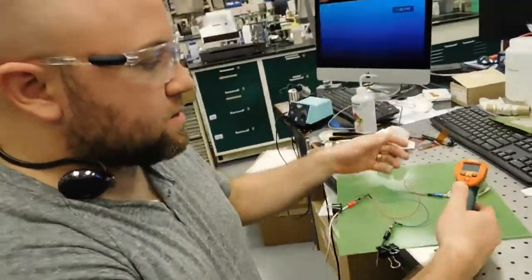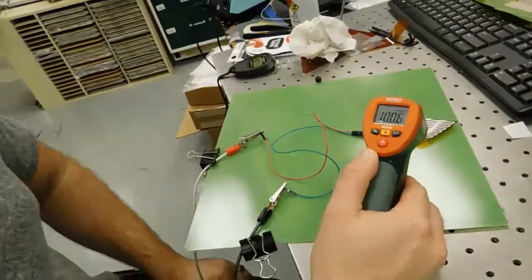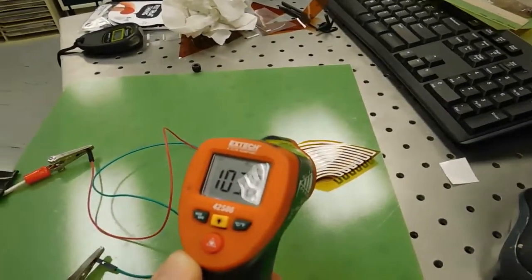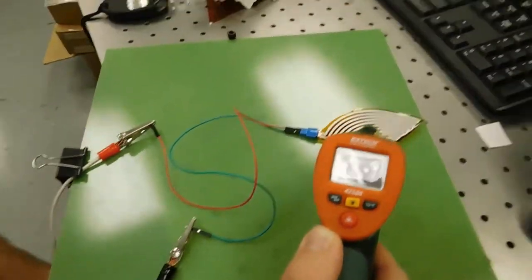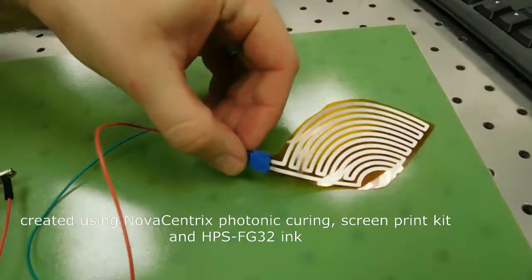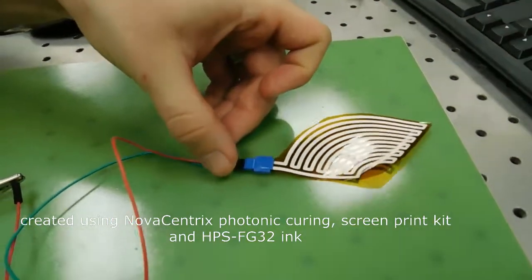And of course it's a heater, so you should expect that when I do that I get a heat rise. What you can see is it's about 100 degrees Celsius right now, and that's again just for screen printing silver.